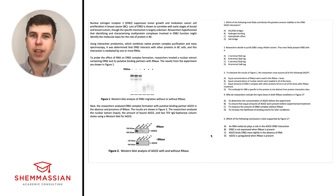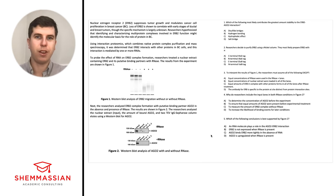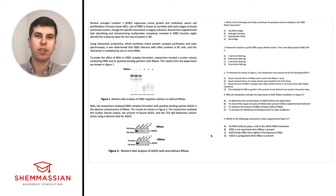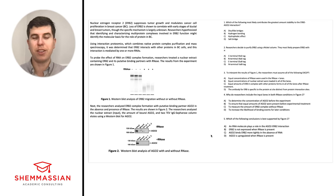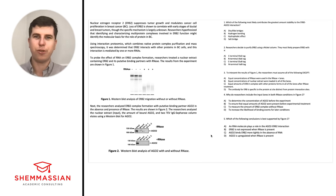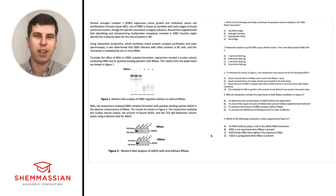It's about a seven-hour test divided into four sections. The first section is Chemistry and Physics. Then you get a short break. The second section is CARS — Critical Analysis and Reasoning — where you do reading and answering of questions. Then a short lunch break. The third section is Biology and Biochemistry, which is what we're working on today. Then another short break, and you finish with Psychology and Sociology.